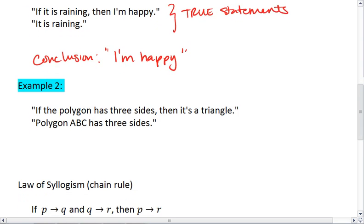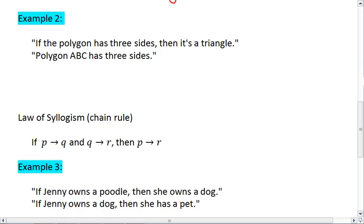Let's try one more example. If the polygon has three sides, then it's a triangle. Polygon ABC has three sides. Take a moment, come up with your conclusion, and then start the video back up when you're ready to check. Again, we have a true conditional statement, and we have a true hypothesis, meaning our conclusion is that polygon ABC is a triangle.